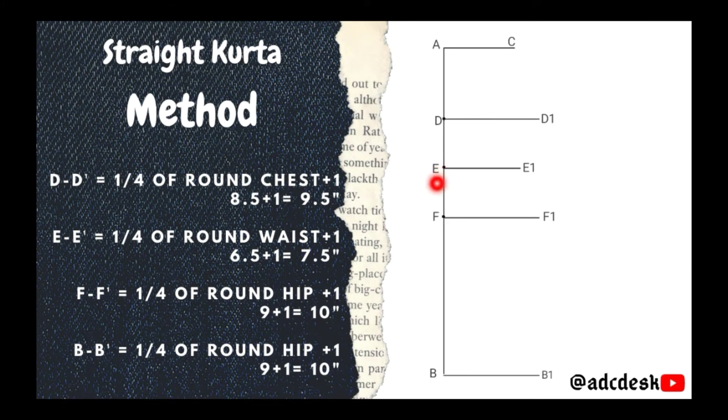E to E1, one-fourth of round waist plus one, 6.5 plus 1, that is 7.5 inches. F to F1, one-fourth of round hip plus one, 9 plus 1 equals 10 inches. B to B1, one-fourth of round hip plus one, that is 9 plus 1, 10 inches.